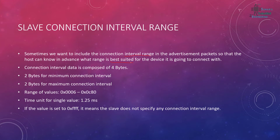Sometimes we want to include the connection interval range in the advertisement packets so the host can know in advance what range is best suited for the device it is going to connect with. Connection interval data is composed of four bytes — two bytes for the minimum connection interval range and two bytes for the maximum. The range values are in hexadecimal, from 0x0006 to 0x0C80, and the time unit for a single value is 1.25 milliseconds.